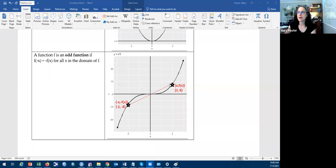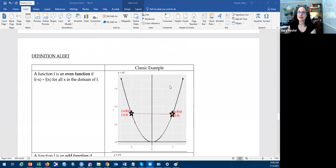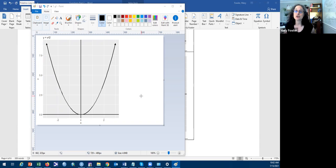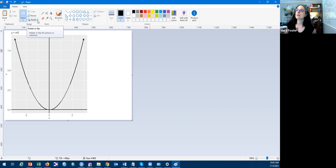Okay, and one thing we want to talk about, both for the even function and for the odd function, is how we see this, and we can see this through a transformation. So to show you, to be able to observe the transformation, I opened up the graph of y equals x squared in paint. And paint is nice because you can flip it, you can rotate it.